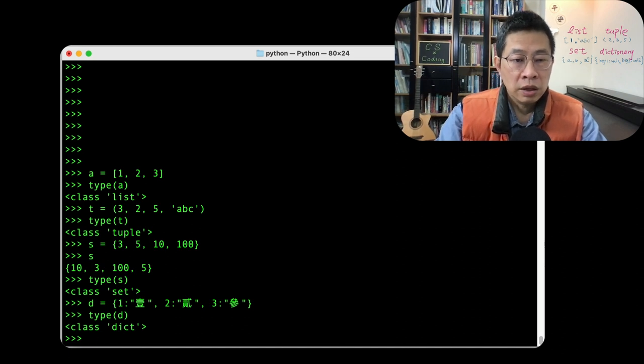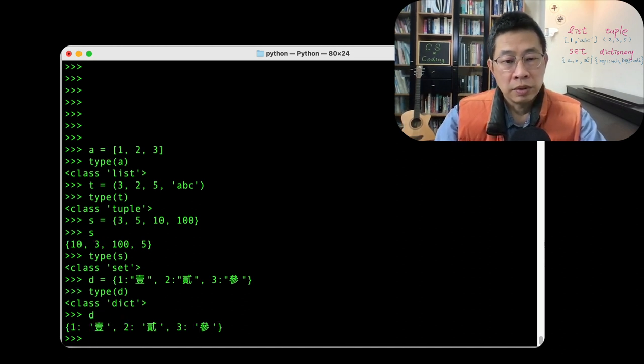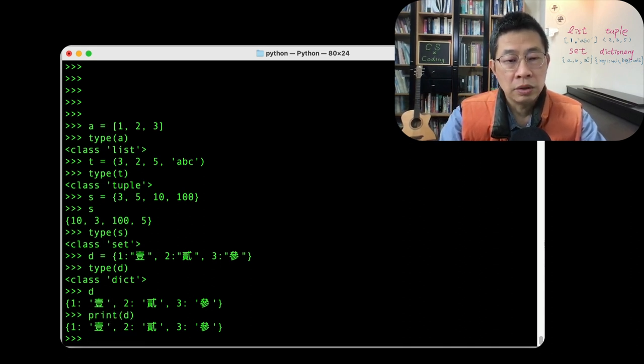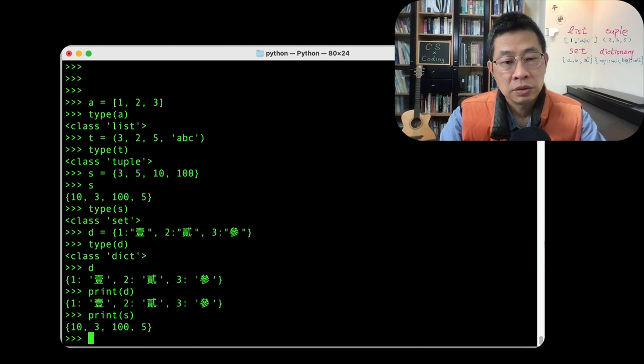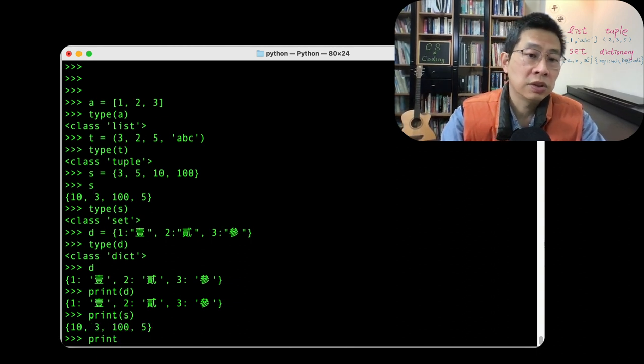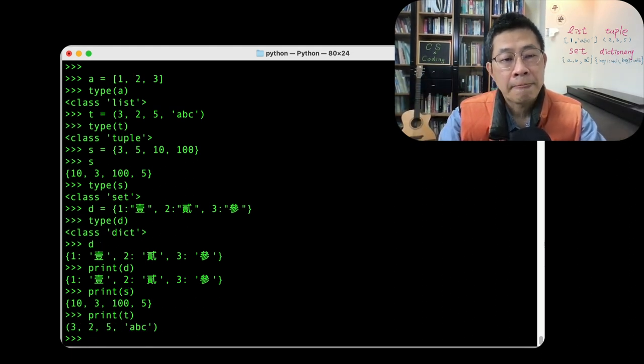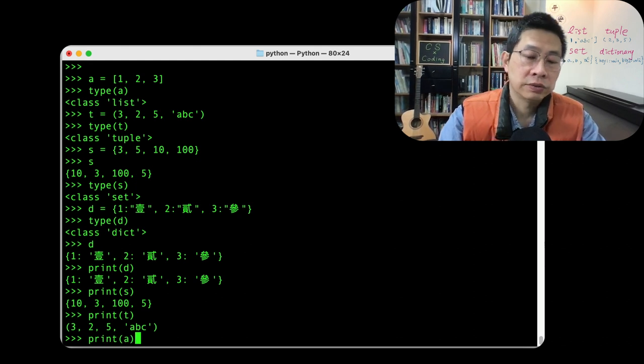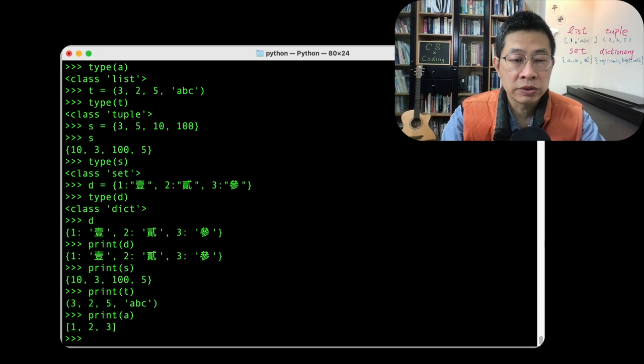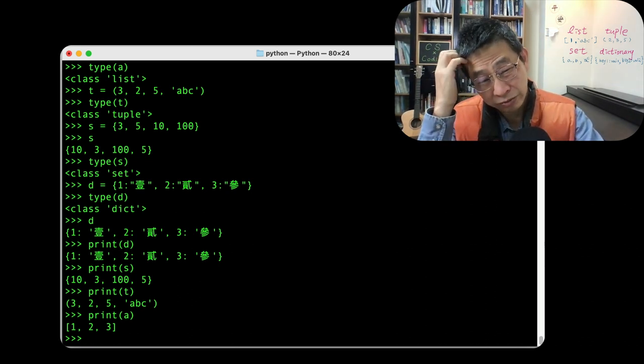And then you can kind of print it out. You can print D, dictionary, print S. That's a set, print list data structure, tuple. Parenthesis. And then you can print A, a list. I should give you the name as L, list. But that's fine.